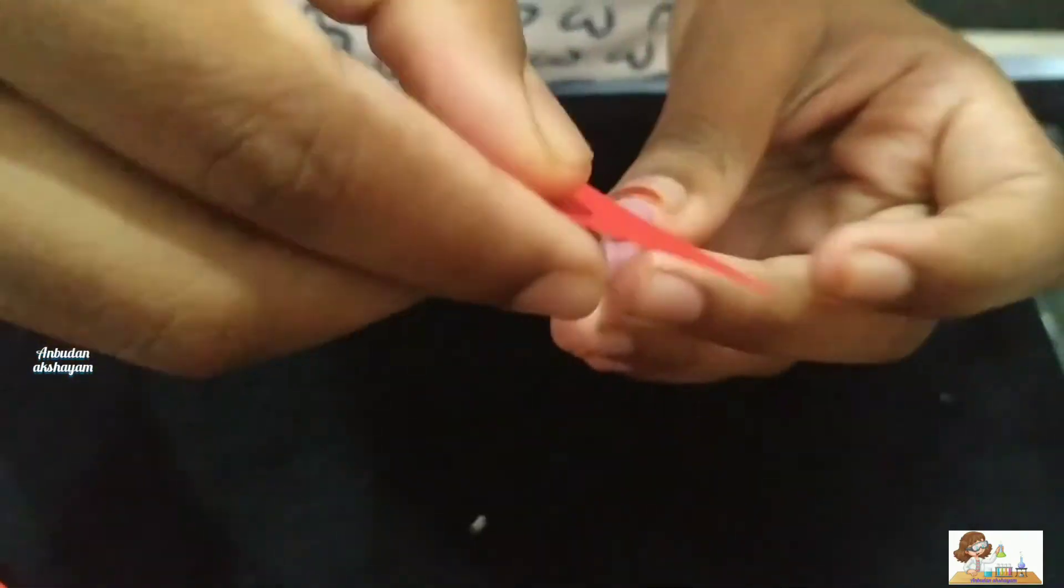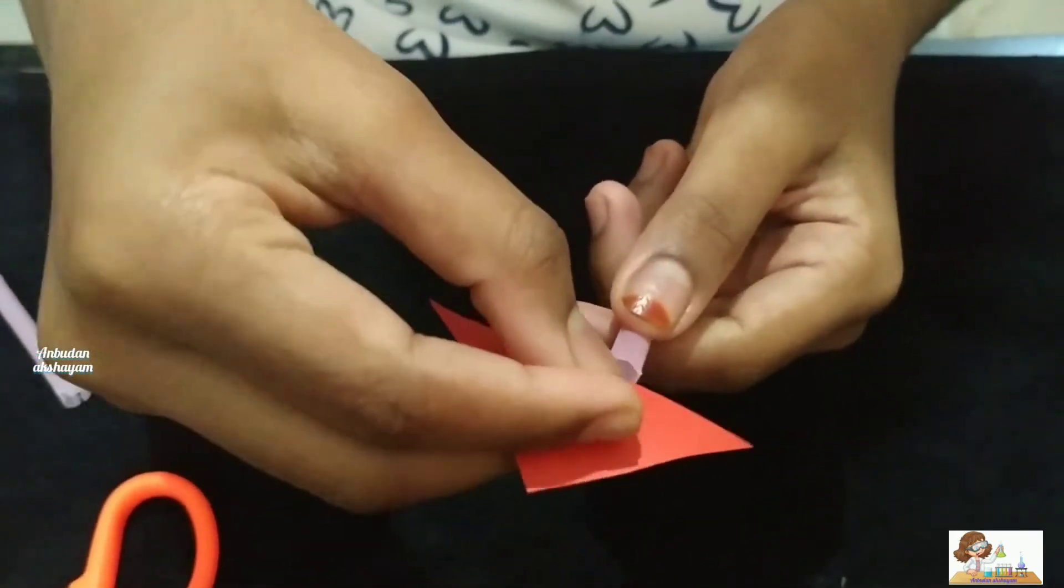Make a small cut at the edge of the straw and insert the triangle shape paper.